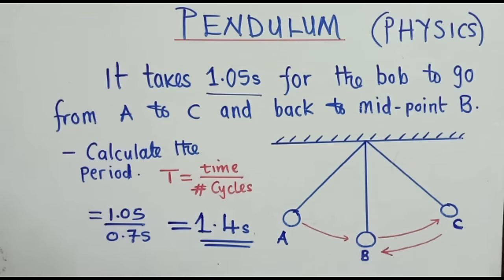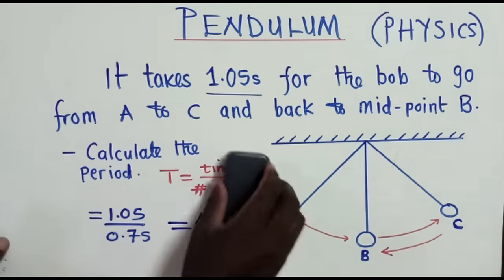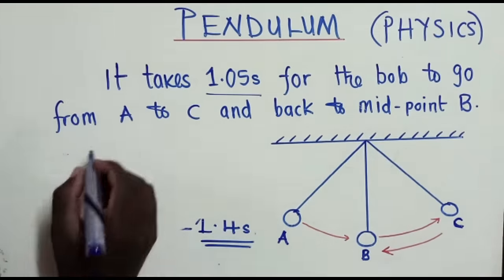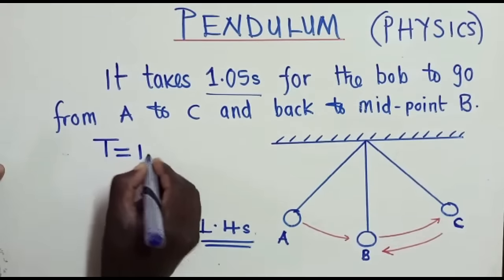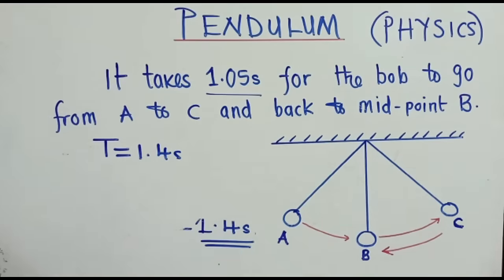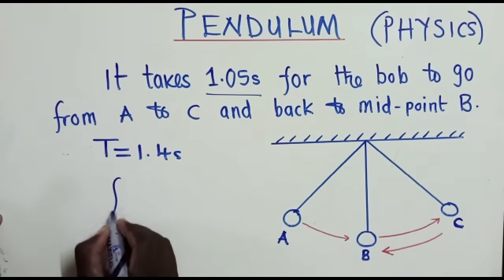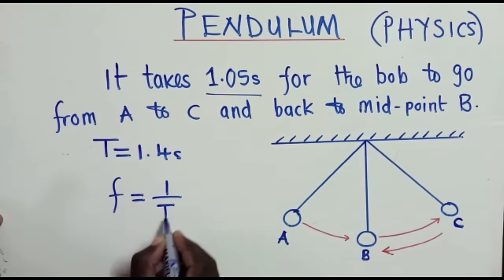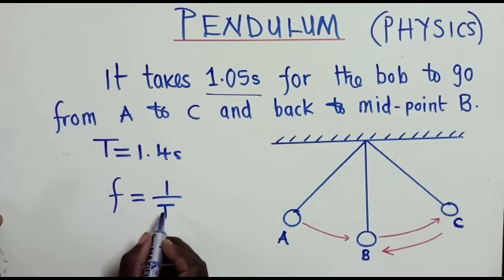Now, you may be asked to find the frequency. So in case they ask you to find the frequency, remember the period, we're saying it's 1.4 seconds. So now, what about the frequency? In case you're asked to find the frequency, what do you do? We know the formula for finding frequency is that f is equal to 1 over T. So this is the period.